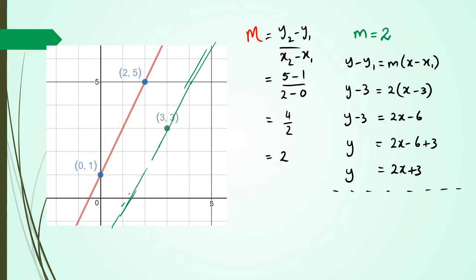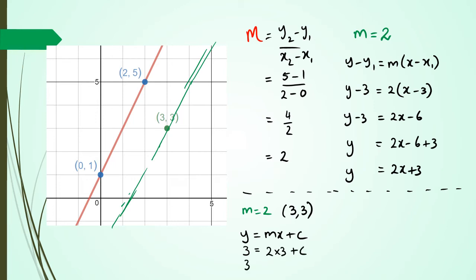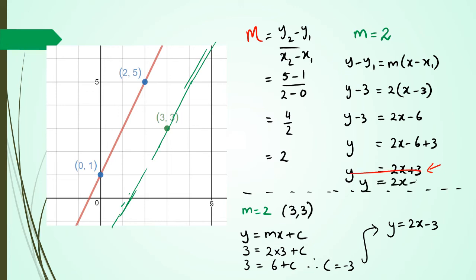Alright, now you could have done it the other way as well where you have the gradient equal to 2 and using the point (3, 3). So y equals mx plus c — y is 3, m is 2 times 3 plus c. So 3 equals 6 plus c. Therefore c equals minus 3. I've realized where I made my mistake — that should be minus 3. So I should have actually got y equals 2x minus 3, because negative 6 plus 3 is negative 3.